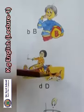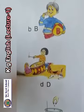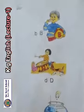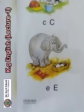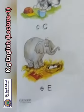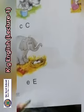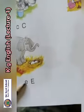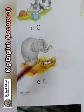The fifth letter is E. Capital E, small e. The sound of E is 'e'. E-a, elephant. E-a, egg.